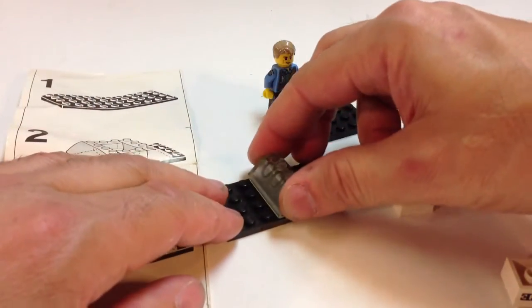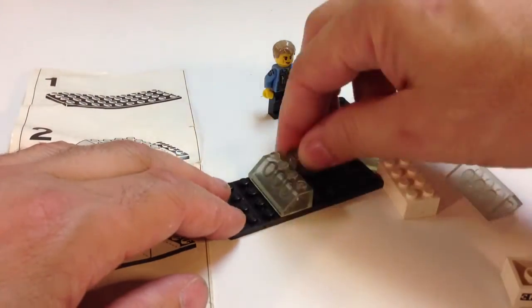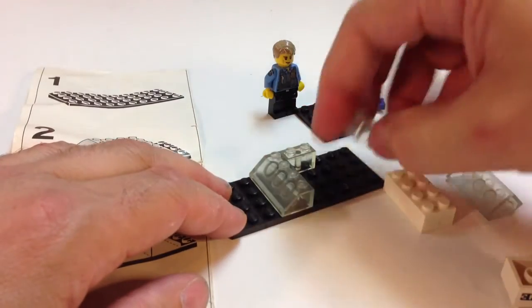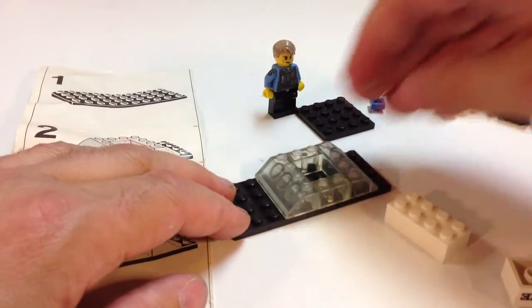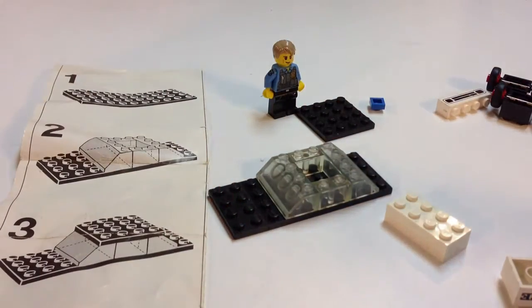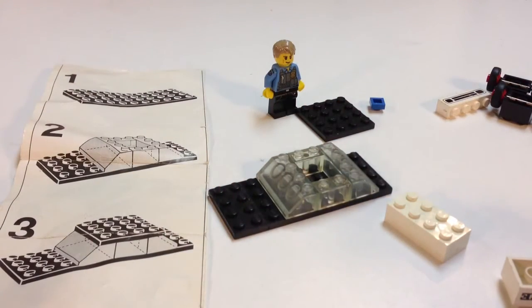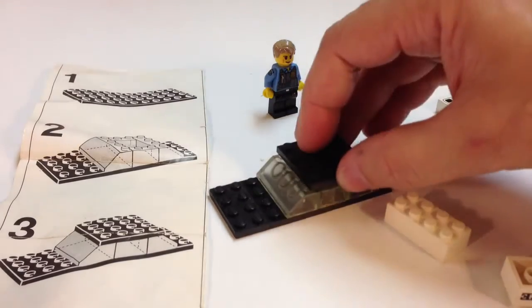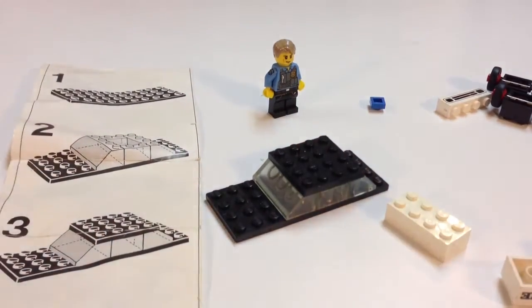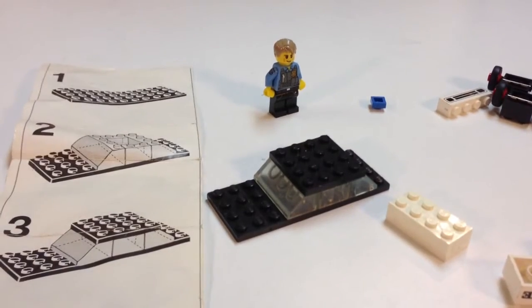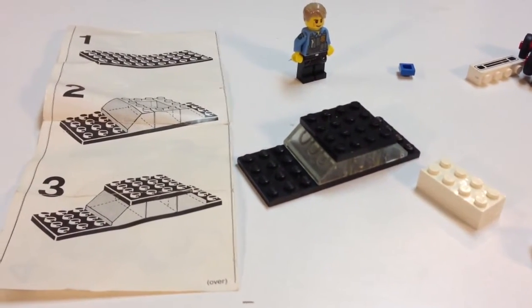Step two. We'll put on the two by four 45 degree slopes and your one by two trans clear bricks. All right, step three. Oh yeah, I need that. It goes there. All right, I'm going to try to do this. Wait a minute. It's not finished. What do I do? That's all it is.